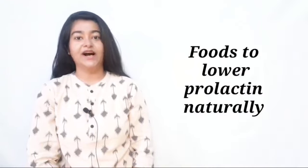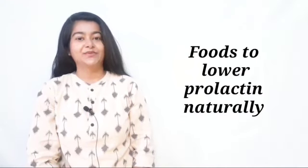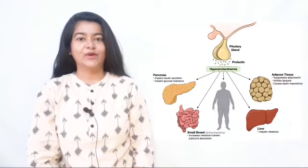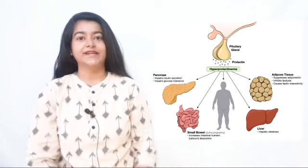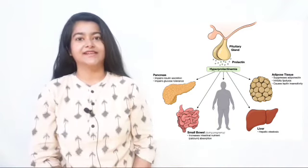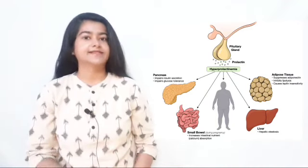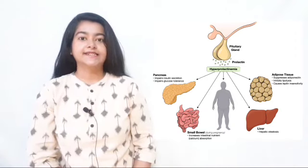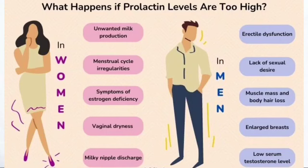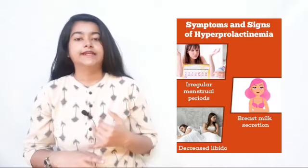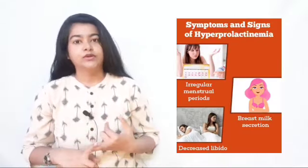Hello friends, in today's video we will be talking about the various things that we can include in our diet to lower prolactin naturally. Prolactin is a hormone that plays various roles in our body, but many times the body produces it in excess, and this condition is known as hyperprolactinemia, which creates various problems like infertility and irregular periods.